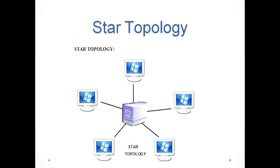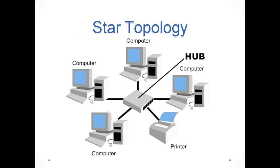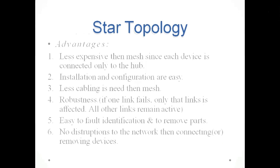This is the pictorial representation of star topology. There is a central hub and all systems are connected to the hub — printers, systems, everything are connected to the hub. Advantages of star topology: it is less expensive than mesh since each device is connected only to the hub. Installation and configuration are easy, and less cabling is needed than in mesh.